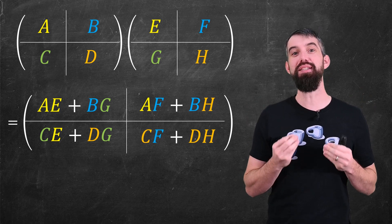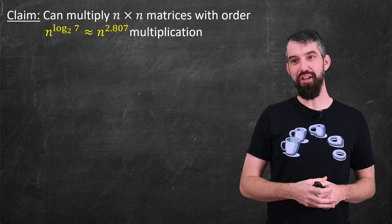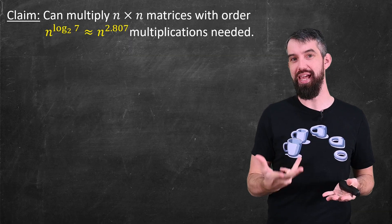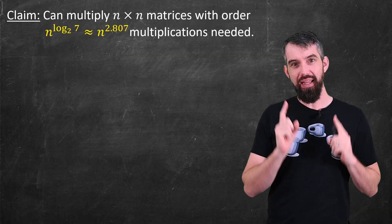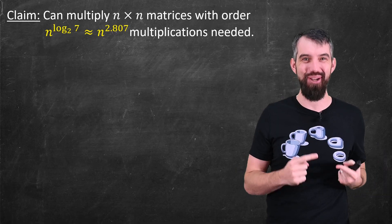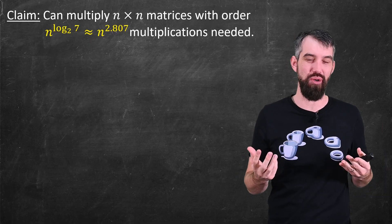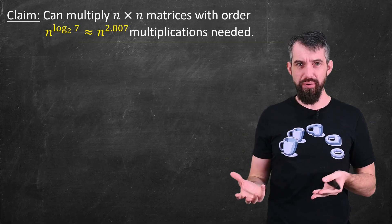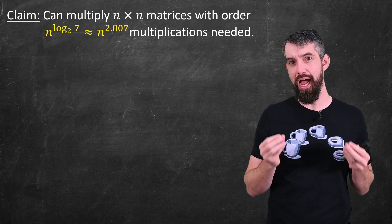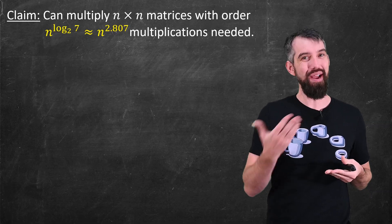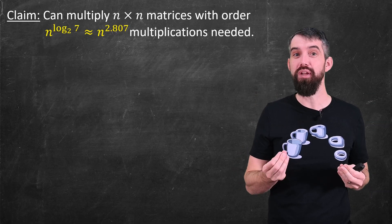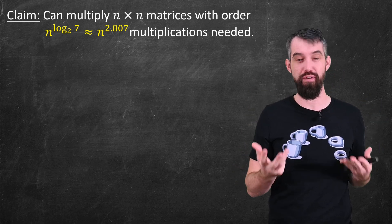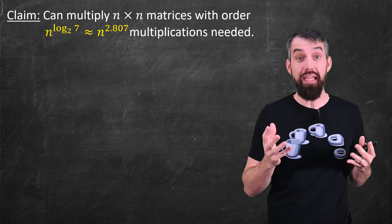So the claim here is that if I'm going to be multiplying two n by n matrices together, I want to think about how many multiplications are truly needed. The claim is that it's n to the log base 2 of 7 of them that are needed. So approximately n to the 2.807. This business of the logarithms, well, I have some explaining to do for sure, but I want you to note that 2.8 is less than 3, and n cubed was the complexity of the original sort of standard algorithm for multiplying things. And so this theorem really gains us something.